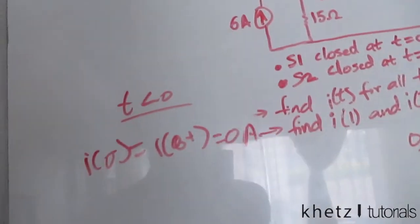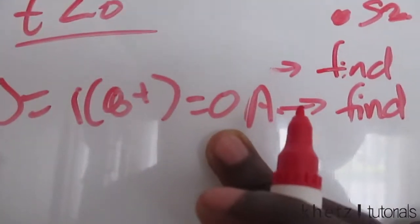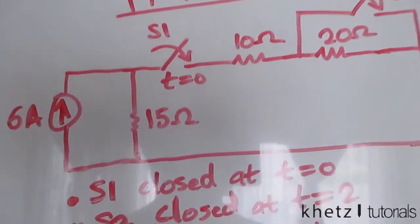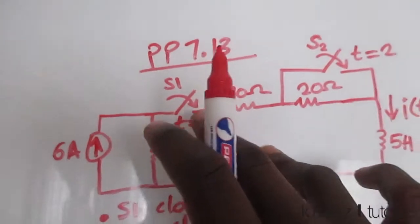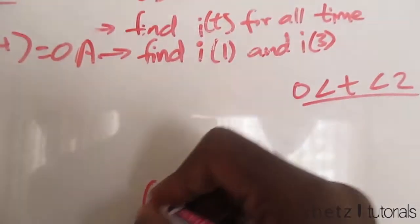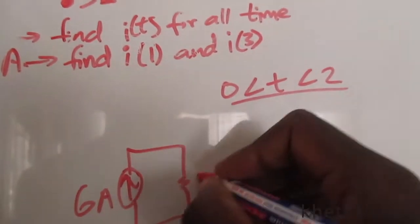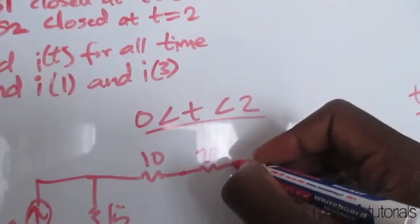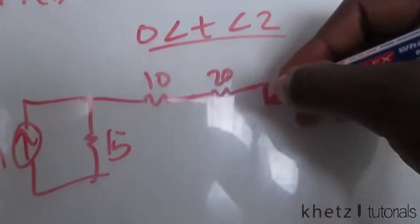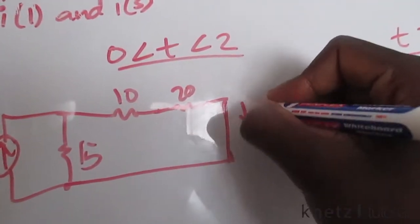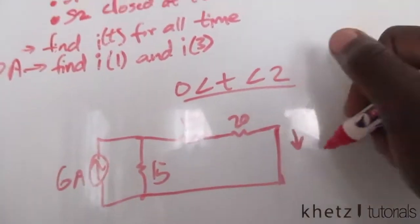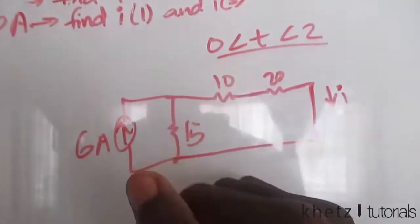That's our first interval. Now we move to 0 < t < 2. Our initial condition i(0) = 0 A. After closing S1 at t = 0, the circuit now has a 15 Ω resistor, a 10 Ω resistor, a 20 Ω resistor, and the inductor. The inductor acts as a short circuit at DC steady state, so we can find i∞.